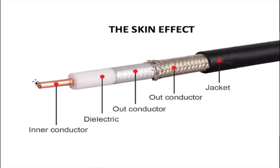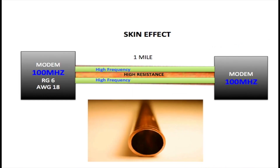Have any of you ever heard of the skin effect? I'm really curious — if you have, please drop me a line in the comment area below. The skin effect has to do with how high frequencies travel through copper, and of course this inner conductor is made of copper. I'm going to use a diagram to explain how the skin effect is responsible for coaxial cables having a larger diameter than twisted pair.